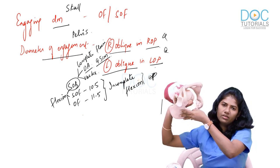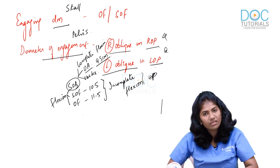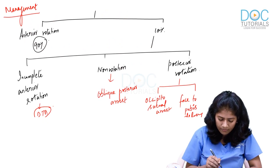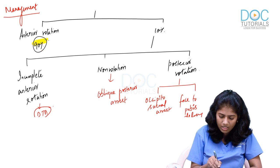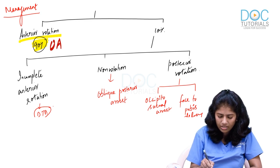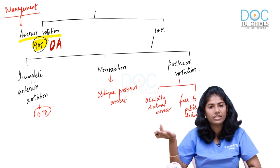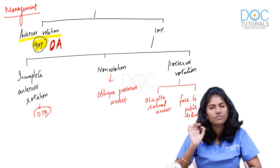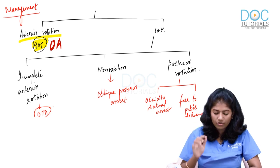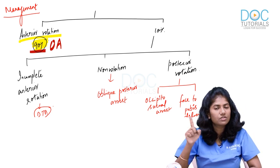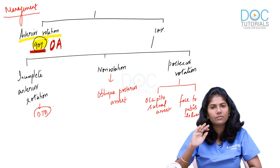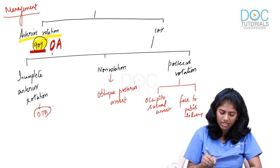Posterior rotation is 1/8th; anterior rotation is 3/8th. Although posterior rotation is easier, 90% of fetuses take anterior rotation. After anterior rotation, they become occipito-anterior and the mechanism of labour proceeds like any normal occipito-anterior — very easy. So when you encounter occipito-posterior in labour, the management is to wait and watch, because 90% of them will rotate and deliver given adequate time.